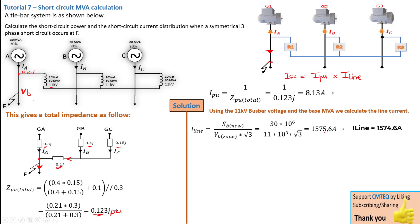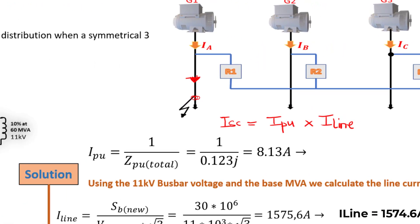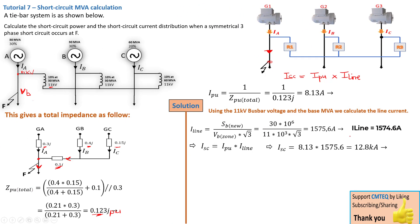This is our line current — the current flowing in this path under normal operating condition. We can then multiply these two currents to get the short circuit current at this point. That is 8.13 times 1575.6, giving us a current of 12.8 kiloamps. This is the total short circuit current. Now that we know what the total current is, we can solve the first question: the short circuit MVA developing at that point.